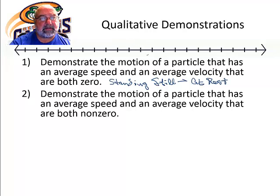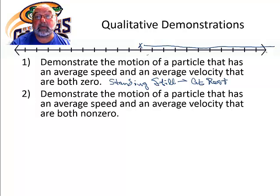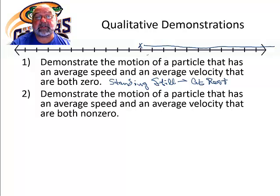As long as we start and keep moving in the same direction, we will have an average speed that's non-zero, and we will also have a displacement that's non-zero, which means we'll have an average velocity that's not zero. As long as we don't end up at our starting position, we will have an average velocity that's not zero.